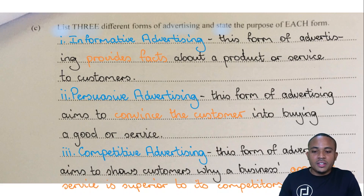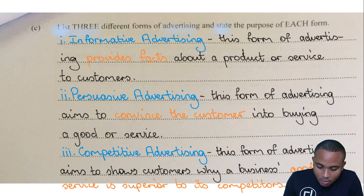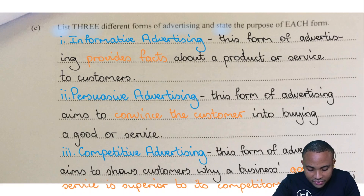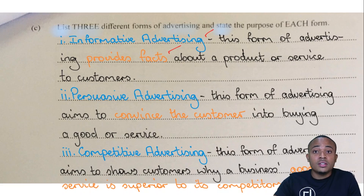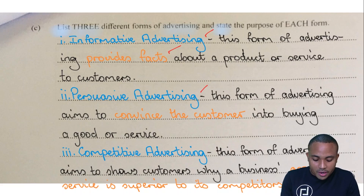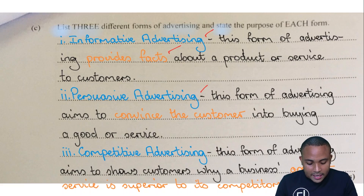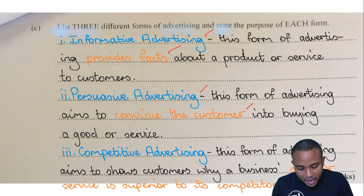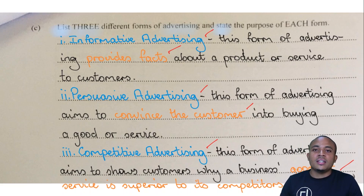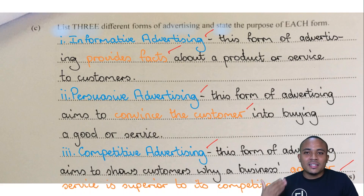First, informative advertising — this form provides facts about a product or service to the customers. Second, persuasive advertising — this is where businesses try to convince customers into buying their good or service. Third, competitive advertising — where the company claims that their good or service is better than the competitors'.